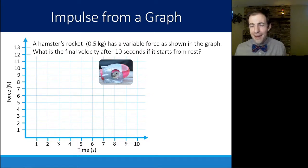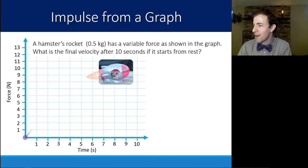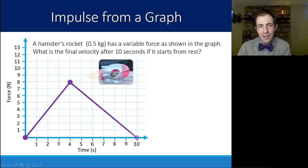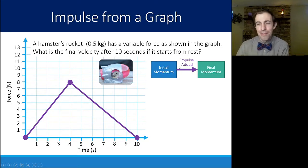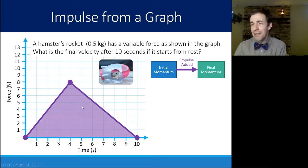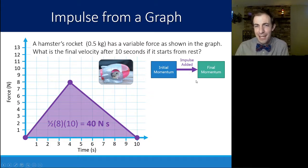We can also calculate impulse from a graph. A hamster rocket — hamster plus rocket has a mass of about 0.5 kilograms — has a variable force shown on a graph. The engine turns on at full force then throttles down until 10 seconds. The impulse is the area bounded by the graph. Since it's a triangle: one-half times base times height, or one-half times 10 times 8, gives an impulse of 40 newton seconds.